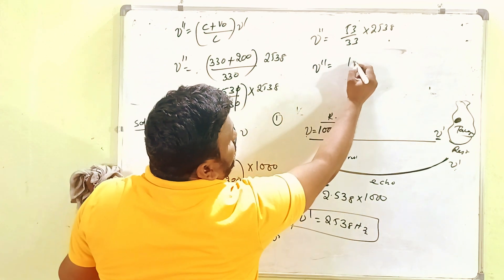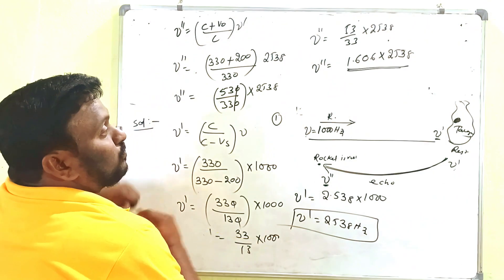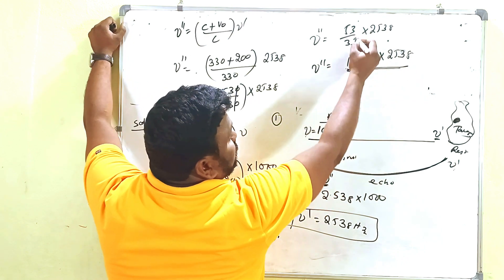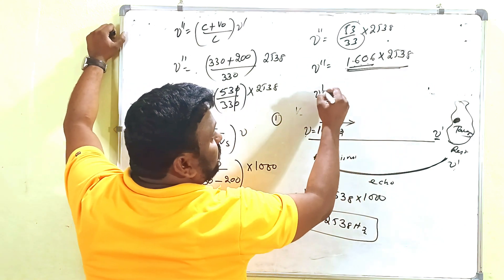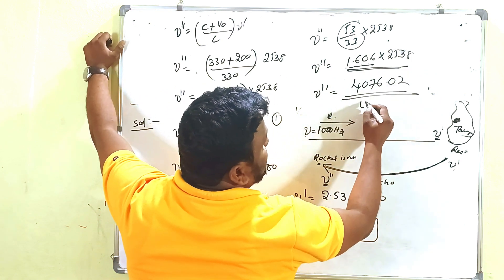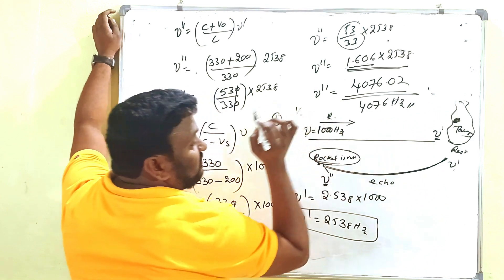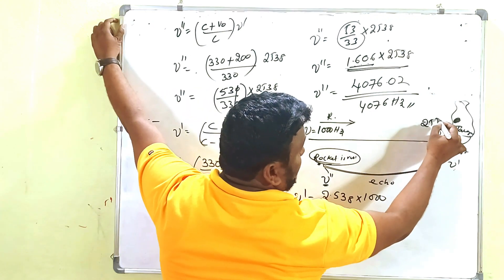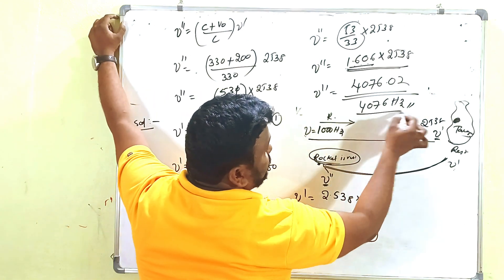The value of 53/33 is 1.606. So ν double dash = 1.606 × 2538, which gives us 4076.02 — approximately 4076 Hz. That is the frequency declared at the rocket. So when moving from rest position to the target, the apparent frequency is 2538 Hz, and the echo frequency received at the rocket is 4076 Hz.